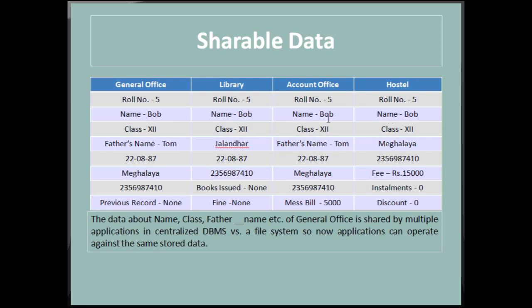Next is shareable data. Data about name, class, father's name, and other fields in the general office is shared by multiple applications in a centralized DBMS, as compared to a file system. New applications can be developed to operate against the same stored data without having to create any new stored files. Anyone seated in the library can log in and access general office information, and anyone in the hostel can access account office data. DBMS is very handy when you want to share data across departments.